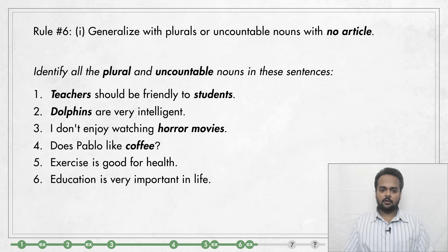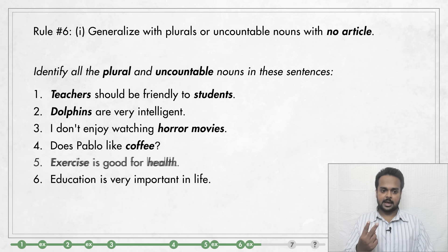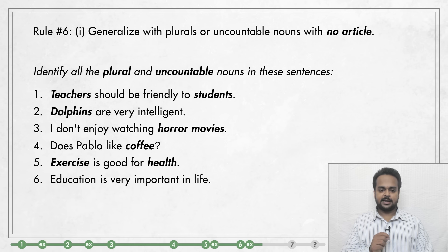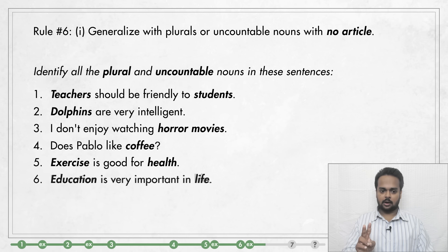In sentence number four, 'coffee' is an uncountable noun and we use no article before it because we want to ask if Pablo likes coffee in general. Number five has two uncountable nouns — exercise and health — and we don't use any articles before them because this is a general statement of fact. And number six is the same kind of sentence, with two uncountable nouns — education and life.